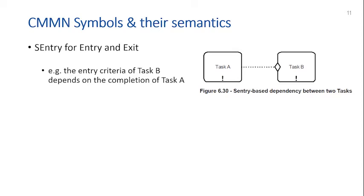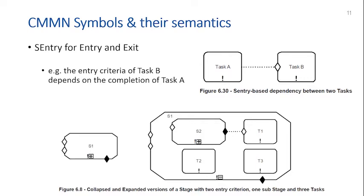Here's an example: task A is connected to task B via a sentry. The event checks whether task A has completed, so the sentry says 'on completion of task A, you can start B.' You might add a condition: 'on completion of task A, if the quantity is larger than 50, do task B.' At the bottom you see two representations of the same stage S1 — collapsed on the left, expanded on the right — showing entry conditions, a nested stage S2, and tasks T1, T2, T3 with corresponding sentries.